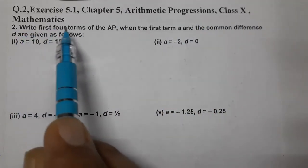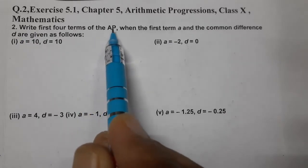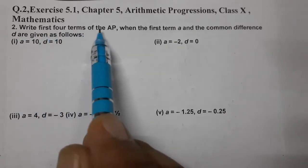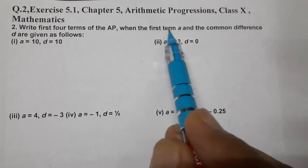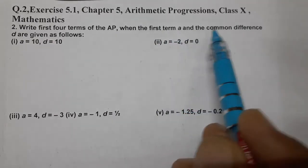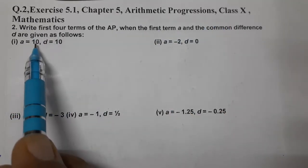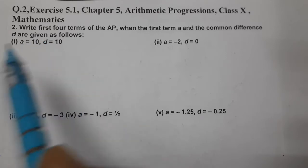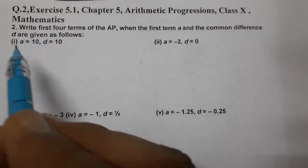Write first 4 terms of the AP. Arithmetic Progression ke 4 terms likhne hain, where the first term A and the common difference D are given us. First term dey rakhe hain, common difference dey rakhe hain.